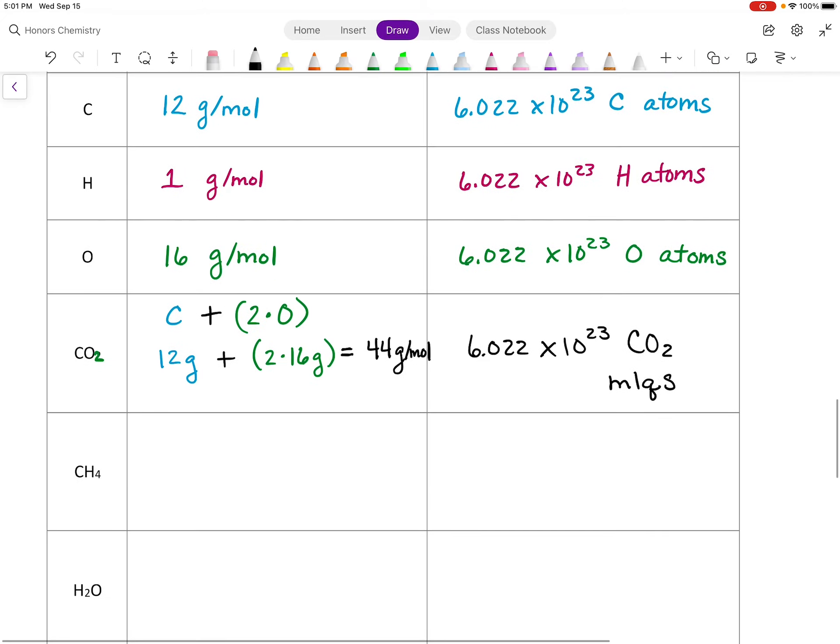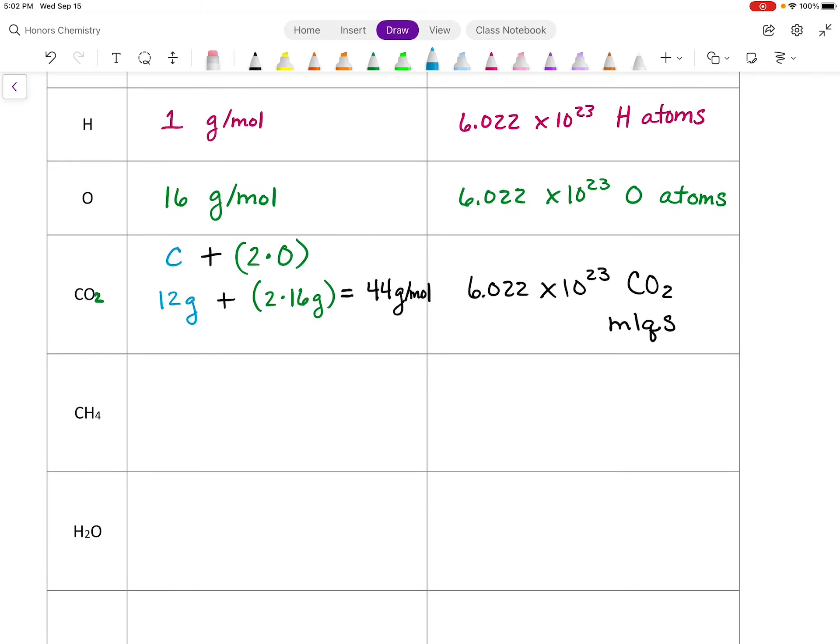We can do the same thing for methane here, so CH4. And I'm kind of working all the process out. I definitely expedite this when I'm working on this, but I'm going to show stepwise what we do. So we have carbon plus we're going to have 4 times the mass of hydrogen. So 4 times hydrogen, 4 times 1 gram for hydrogen, plus that 12 grams for carbon. So it gives me 12 plus another 4, and so we end up with 16 grams per mole.